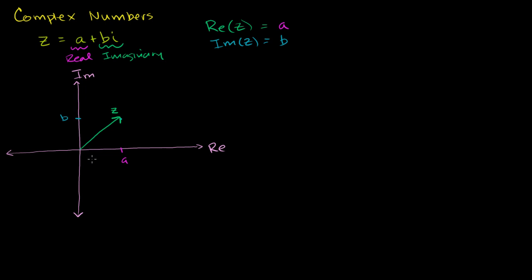When you draw it as a position vector, and if you're familiar with polar coordinates, you're probably thinking: I don't have to represent this complex number just as a plus bi. Maybe I could represent this as some angle, let's call that angle phi, and some distance, let's call that r, which is the magnitude of this vector. That would also specify this point in a complex plane. This angle is called the argument of the complex number, and r is called the magnitude, or sometimes the modulus, or the absolute value of the complex number.